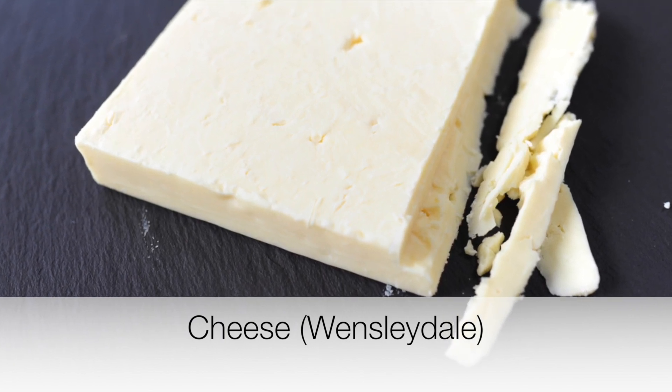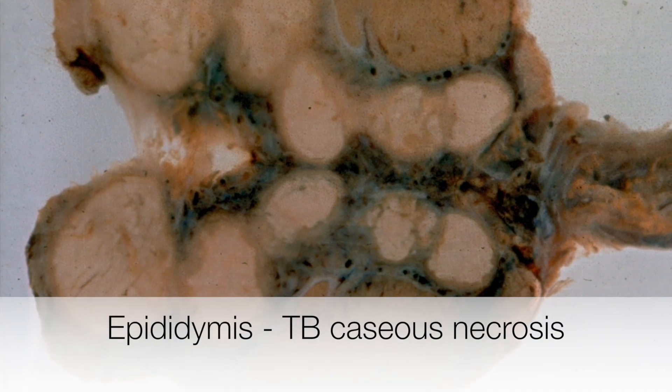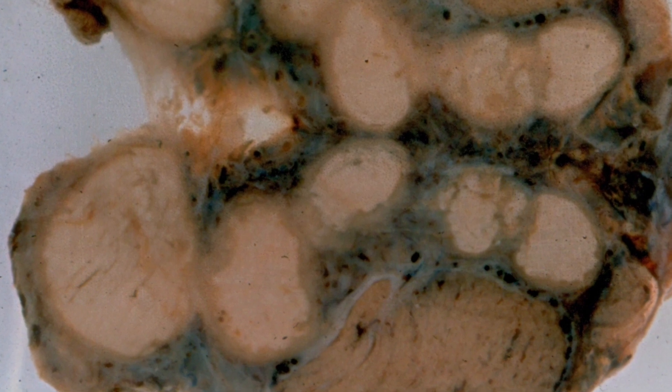The condition that has caused swelling in this epididymis is TB, and the cheese-like appearance is caused by caseation. Caseous means cheese-like.